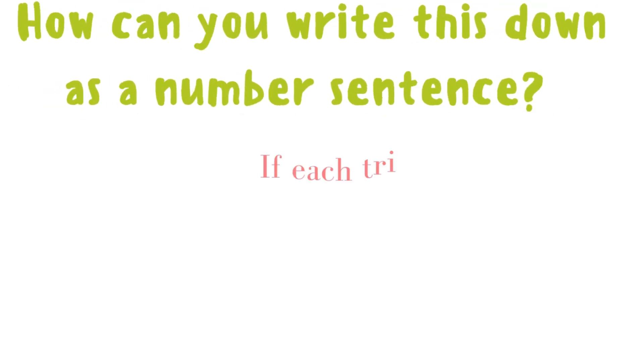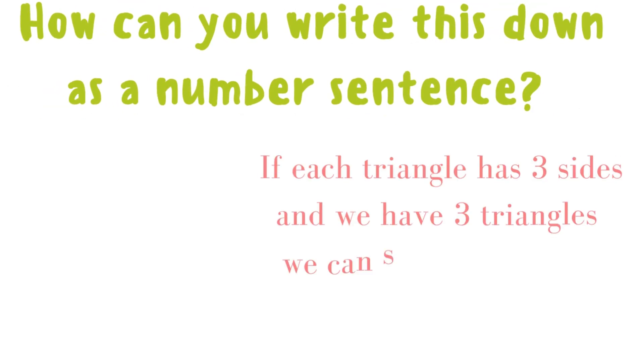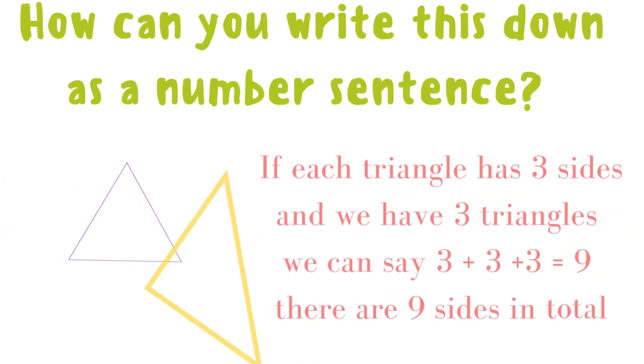How can you write this down as a number sentence? If each triangle has three sides, and we have three triangles, we can say 3 plus 3 plus 3 equals 9. There are 9 sides in total.